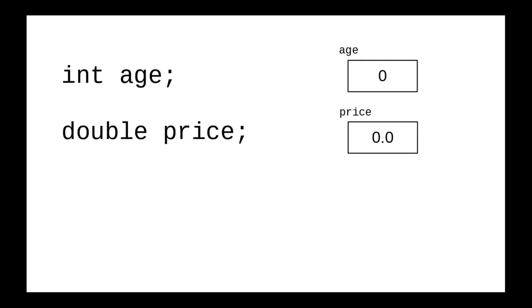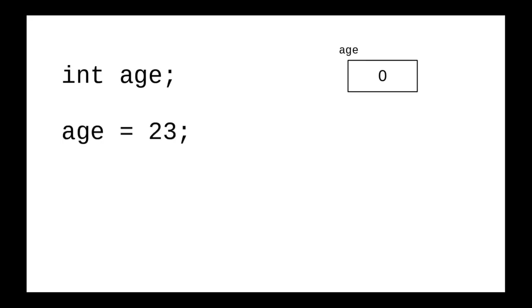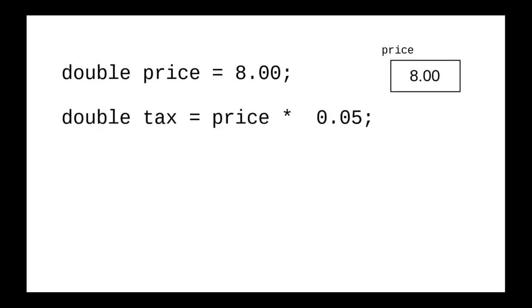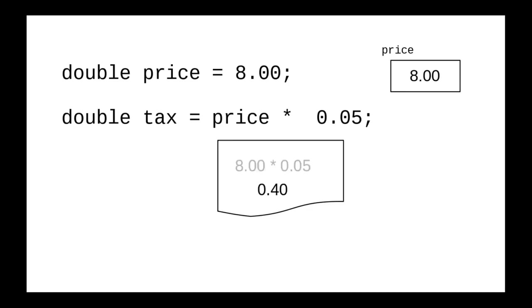You can assign new values to variables. The way Java does this is to look at the right-hand side, figure out what it works out to — in this case 23 — and then store that in the variable on the left-hand side, replacing whatever used to be there. It's also possible to declare a variable and give it a value in one step. In this case, the right-hand side works out to 8, and that gets stored in the newly declared variable price. For an assignment statement, we always start with the right-hand side. So, taking the current value of price — which is 8.00 — multiplied by 0.05 gives a result of 0.40. Now and only now do we look at the left-hand side and find that variable tax receives that value.